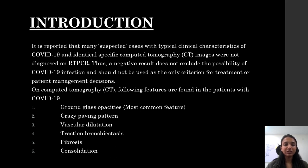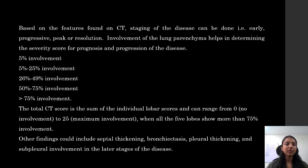On computed tomography, the following features are found in patients with COVID-19: ground glass opacity, which is the most common feature; crazy paving pattern; vascular dilatation; traction bronchiectasis; fibrosis and consolidation. Based on the features found on CT, staging of the disease can be done — that is early, progressive, peak, or resolution.